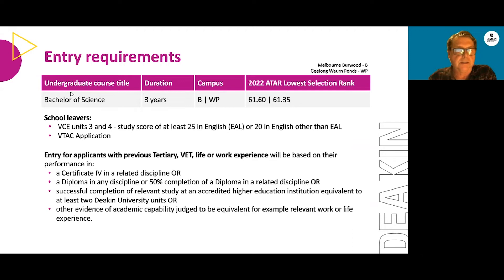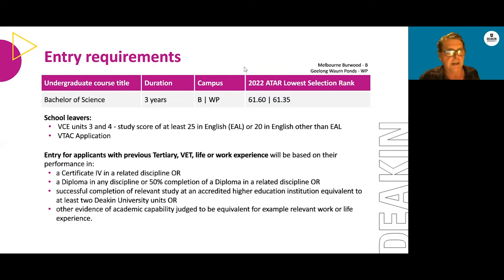The entry requirements for the single degree Bachelor of Science, which is three years in duration and offered on the Burwood campus in Melbourne and the Waurn Ponds campus near Geelong, require an ATAR of at least within the 60s. It varies a little year to year, but it's usually within the 60s for the lowest selection rank. You also need VCE with the right subjects and units three and four, and a study score in English of at least 20, or 25 if you're doing English as another language.